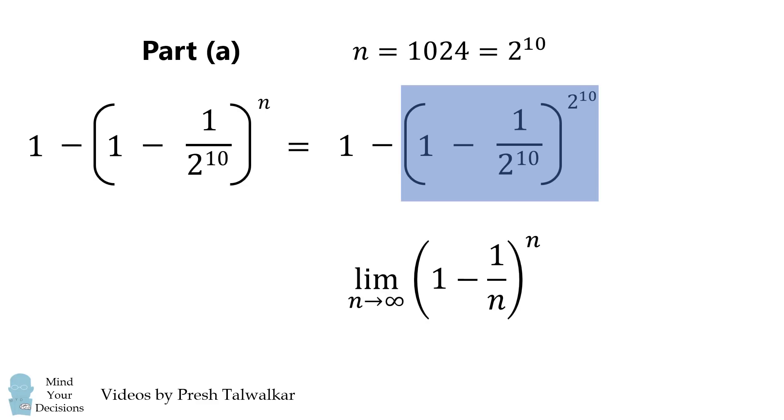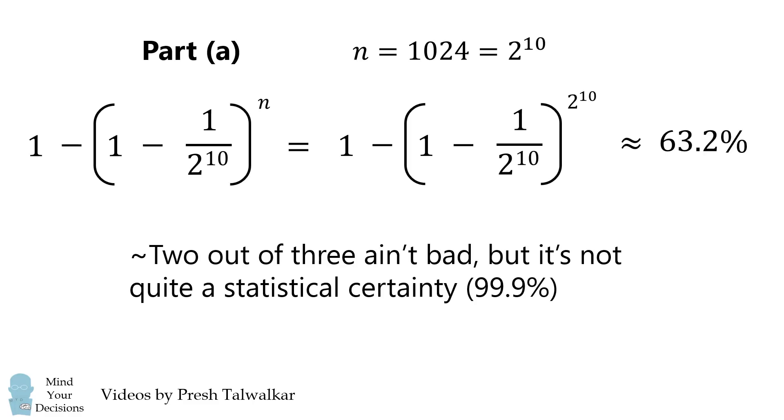If we take the limit as n goes to infinity, we get 1 over e, which is approximately 36.8%. We want 1 minus that, so above we'll get approximately 63.2%. It's nearly 2 out of 3, and that ain't bad, but it's not quite a statistical certainty.